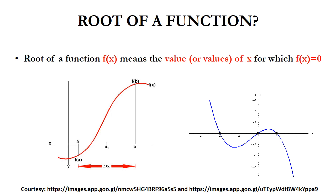Initially we have to understand what is meant by root of a function. Root of a function f(x) means the value or values of x for which f(x) becomes 0. In this graph, f(x) becomes 0 at a particular x value, so that x value is the root. In another graph, f(x) becomes 0 at three points: x = -2, x = 0, and x = 1, which are the roots of the function.